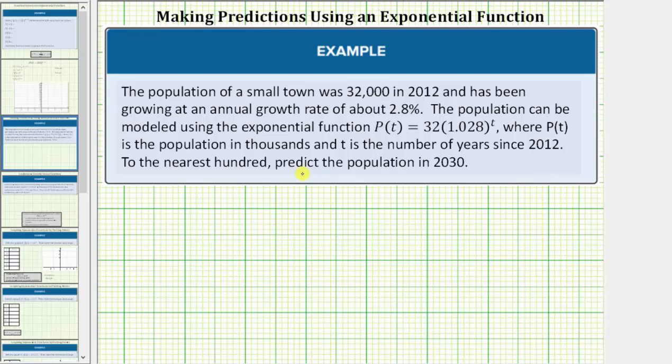To the nearest hundred, predict the population in 2030. To make the prediction, we'll be using the exponential function p(t) = 32(1.028)^t, again where p(t) is the population in thousands and t is the number of years since 2012.